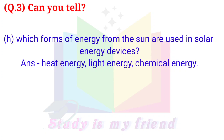H. Which forms of energy from the sun are used in solar devices? Answer: Heat energy, Light energy, Chemical energy.